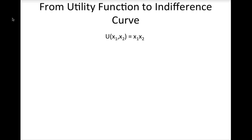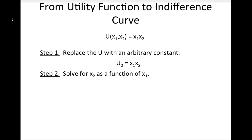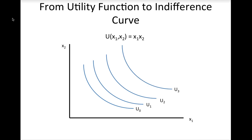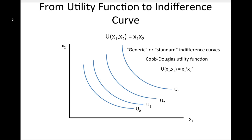Let's try one more example. First, replace the u function with a constant, then solve for x2 as a function of x1. This indifference curve looks like the inverse function since we have x2 equals a constant divided by x1, and of course there is a whole family of indifference curves associated with different utilities. In economics, when we want to represent generic indifference curves, we usually draw them with a shape like the ones in this graph. The utility function used to generate these indifference curves is a special case of the Cobb-Douglas utility function. The generic formula is u of x1 and x2 equals x1 to the c power times x2 to the d power, where the exponents c and d can be any positive number. These indifference curves are for the special case when c and d both equal 1.